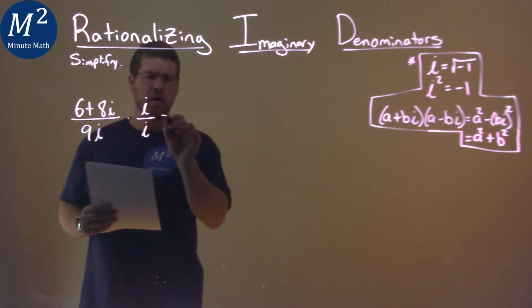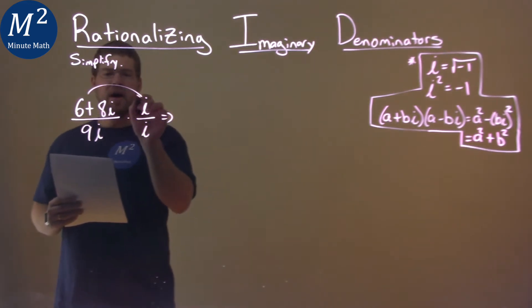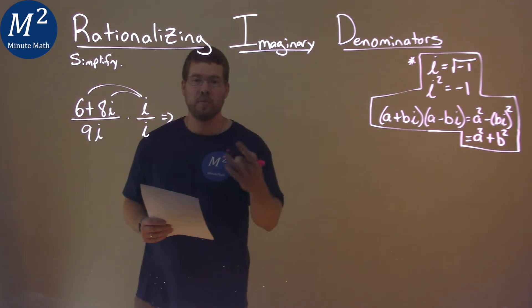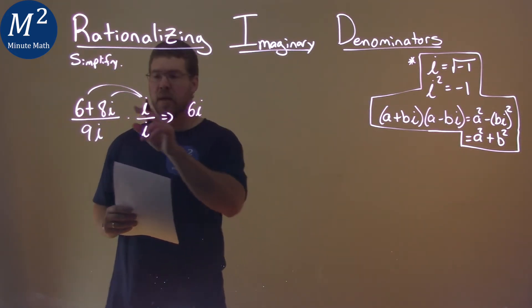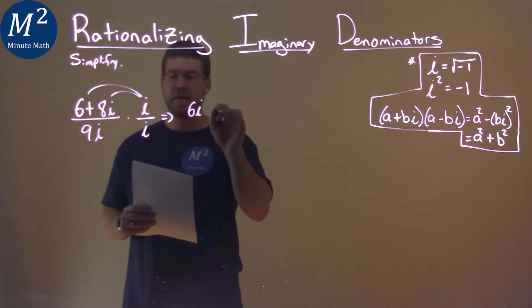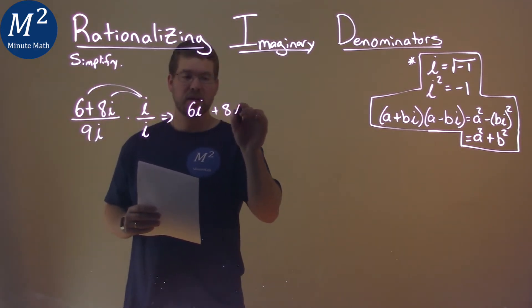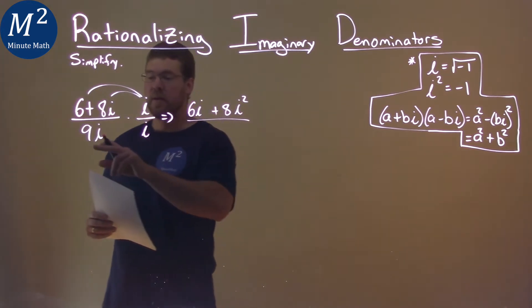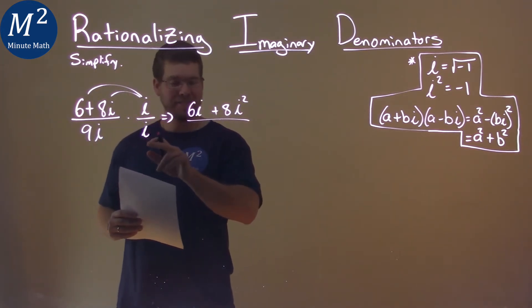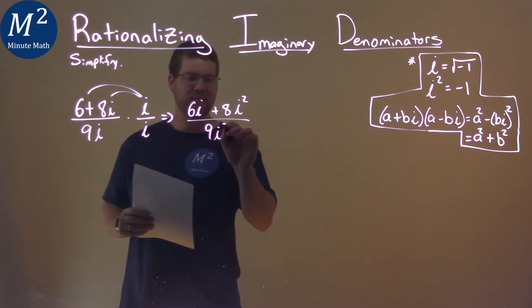What happens here? Well, make sure we distribute this i to both parts in the numerator when we multiply. So 6 times i is 6i, and i times 8i is 8i squared. Now we multiply out the denominator. 9i times i is 9i squared.